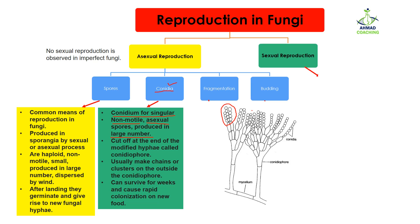In comparison to spores, conidia are present outside the body, not inside. Spores were present inside the sporangium, while in the case of conidia they are present outside their fruiting body. They are cut off at the end of the modified hyphae, which is known as the conidiophore. You can see the conidiophore here, and on it we have conidia that usually make chains or clusters on the outside. They can survive for weeks and cause rapid colonization on new food.